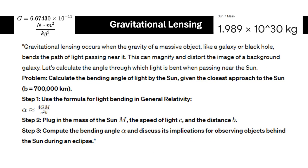Let's move on to another key prediction of General Relativity: gravitational lensing. Gravitational lensing occurs when the gravity of a massive object, like a galaxy or black hole, bends the path of light passing near it. This can magnify and distort the image of a background galaxy.